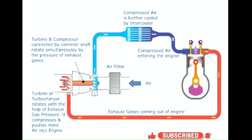Air intake system with turbocharger. The turbocharger has a turbine and a compressor which are connected by a common shaft. The turbine rotates with the help of exhaust gases coming out of the engine, which helps the compressor to compress and push more air into the engine. Compressed air is further cooled by an intercooler to increase its density and engine power.